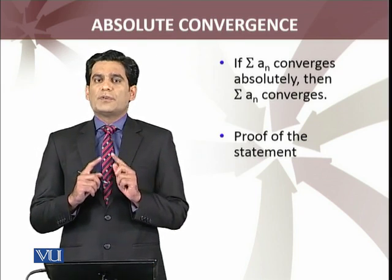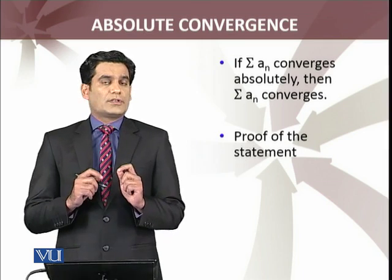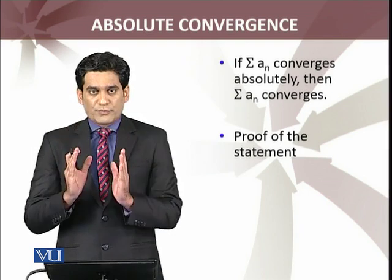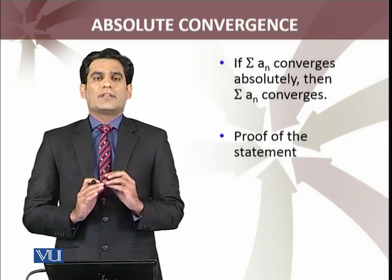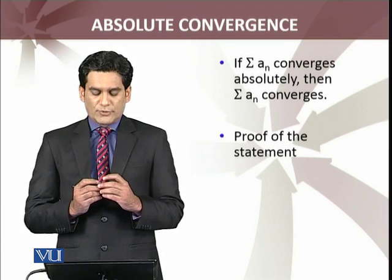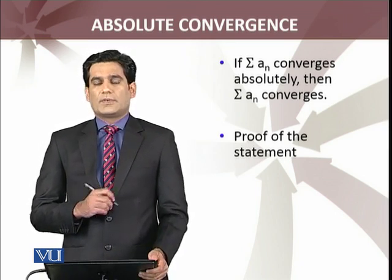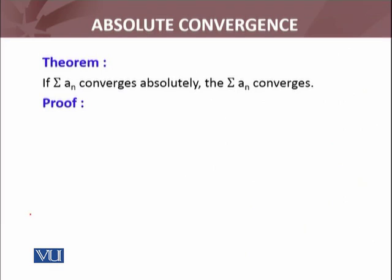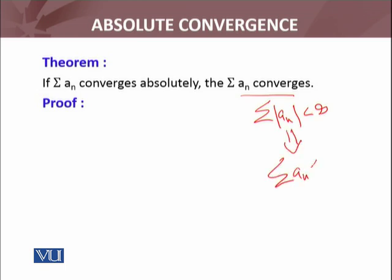We have the statement: if Σaₙ converges absolutely, meaning Σ|aₙ| converges, then we can conclude that Σaₙ without absolute values also converges. I am going to prove that and give an example. The theorem is: if Σaₙ converges absolutely, then Σaₙ converges. The hypothesis is Σ|aₙ| is convergent, and I have to show that Σaₙ is convergent.